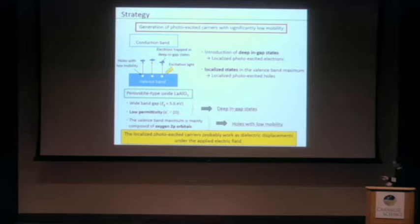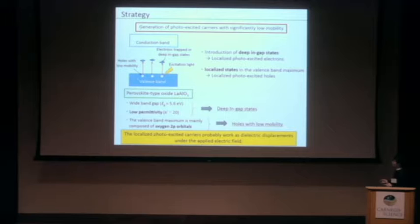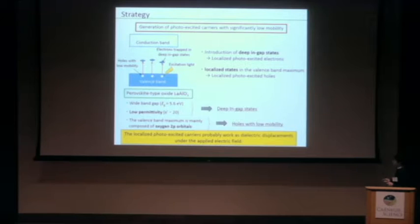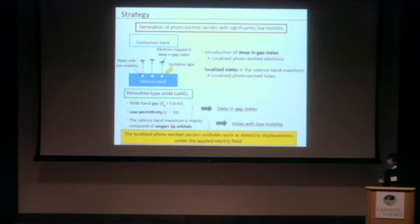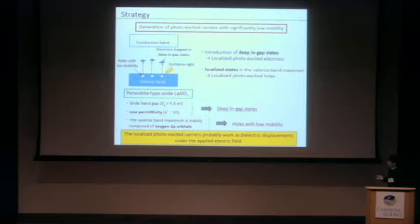Based on this, in this study we focused on the perovskite-type oxide lanthanum aluminate. It has a wide band gap, low permittivity, and a valence band maximum composed of oxygen 2p orbitals. With these properties, we can introduce photo-excited electrons and holes with low mobility.